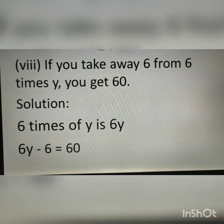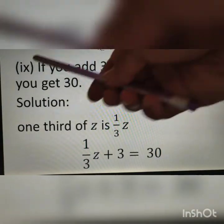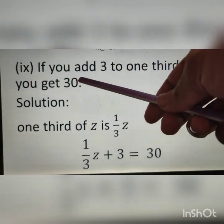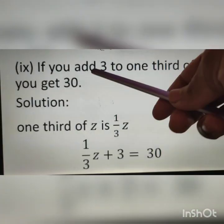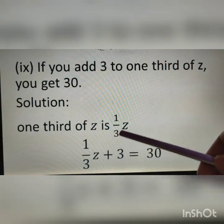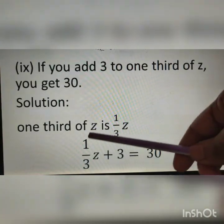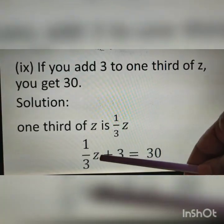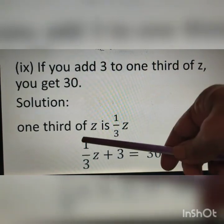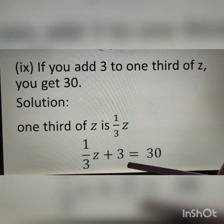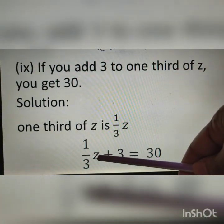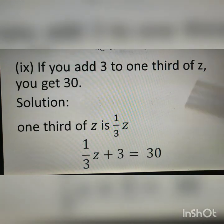Question number 9: if you add 3 to one-third of z, you get 30. One-third of z — we can write 1 upon 3 into z, which can also be written as z upon 3 or 1 by 3 into z. It is given: if you add 3 to one-third of z, so 1 upon 3 into z plus 3. After adding, we get 30. Therefore, 1 by 3 into z plus 3 is equal to 30 is the equation.